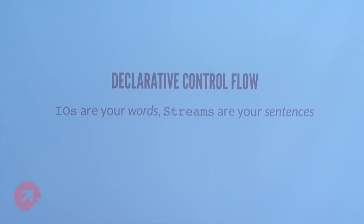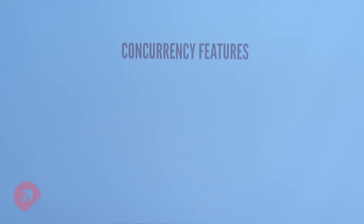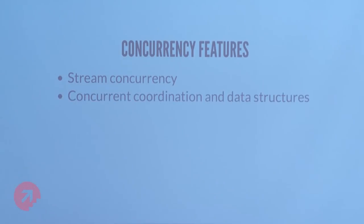Now let's talk about concurrency. FS2 puts stream concurrency at the heart of what we do. I'll give you a quick overview of what features we have. First, stream concurrency: the ability to interleave multiple streams non-deterministically. Concurrent coordination and data structures: as soon as you do this, you need some way of coordinating concurrent interactions, and we offer data structures like queues, semaphores, ref, and several others.